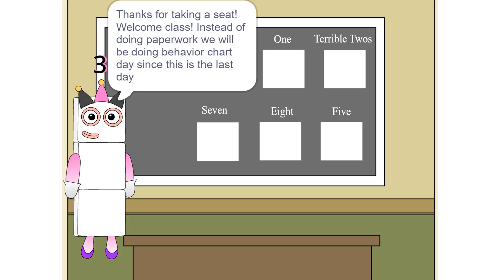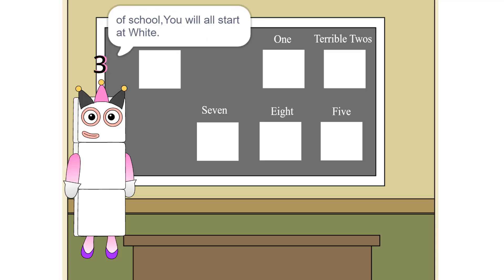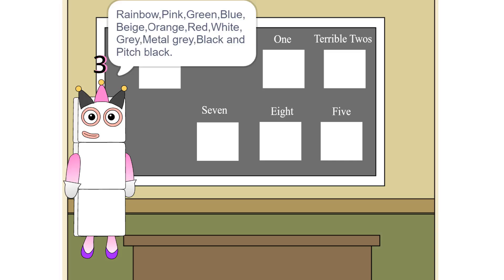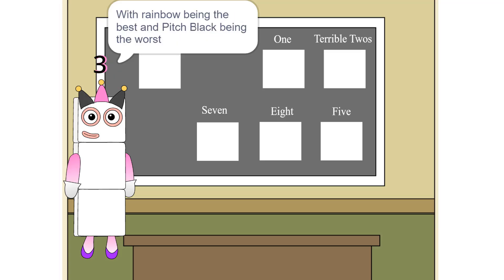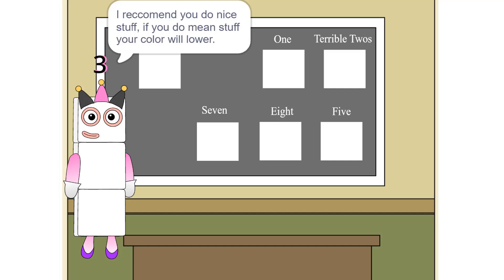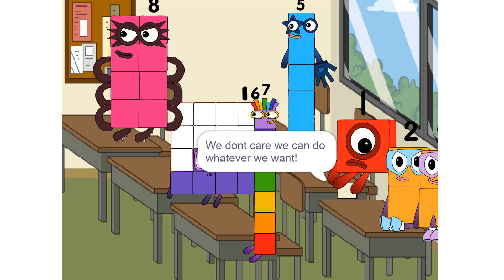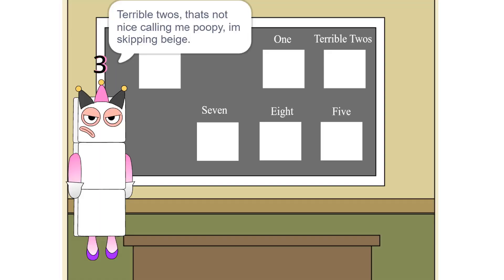Welcome class. Instead of doing paperwork, we will be doing behavior chart day since this is the last day of school. You will all start at white. The colors are rainbow, pink, green, blue, beige, orange, red, white, gray, metal gray, black, and pitch black — with rainbow being the best and pitch black being the worst. I recommend you do nice stuff. If you do mean stuff, your color will lower. We don't care, we can do whatever we want. Poopy teacher!